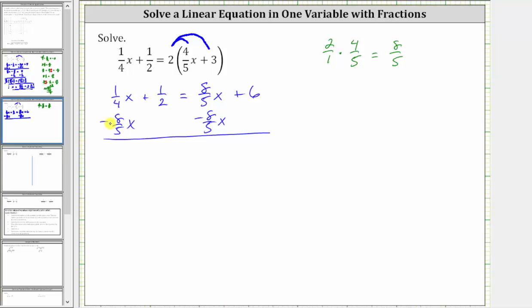To help us determine 1/4 x minus 8/5 x, let's determine 1/4 minus 8/5 here on the right. Notice the least common denominator is going to be four times five or 20, and therefore we need to write both fractions as equivalent fractions with the denominator of 20. And therefore we multiply the numerator and denominator of 1/4 by 5, and the numerator and denominator of 8/5 by 4.